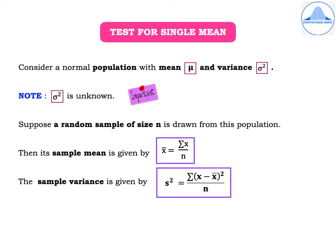Consider a normal population with mean mu and variance sigma square. Note that the population variance sigma square is unknown. This is an important point to keep in mind.